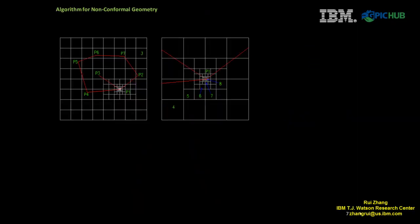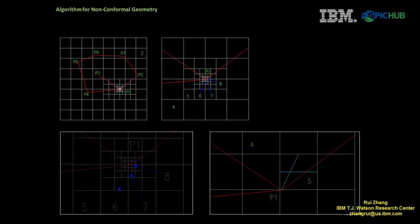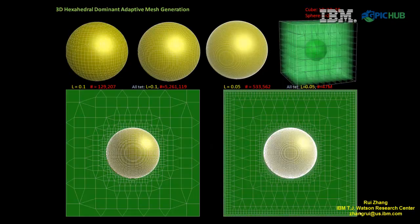For non-conformal geometry, sometimes unnecessarily dense meshes are generated. A special algorithm was applied for such cases, which can control the resolution of generated mesh. The figures show meshes with different resolutions for a model with a sphere in the cube.